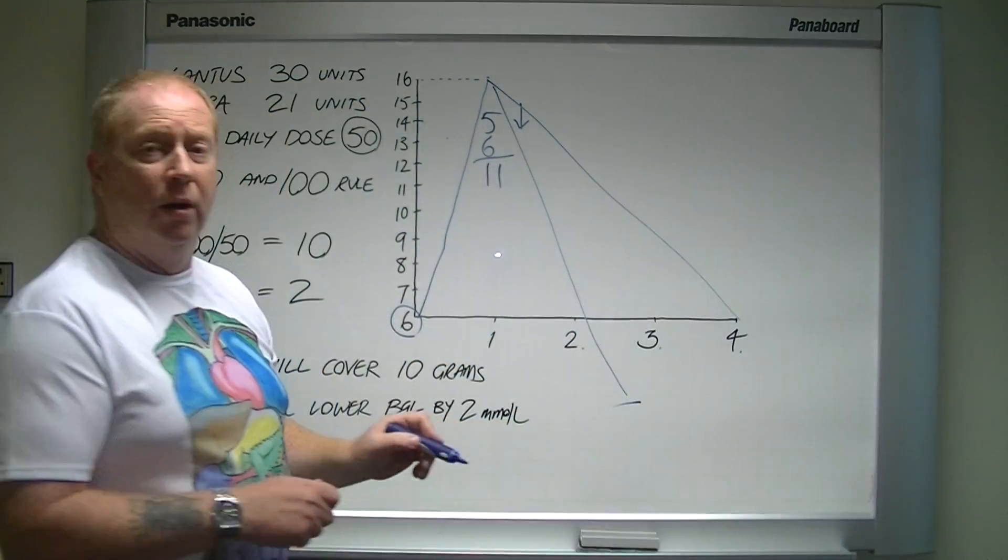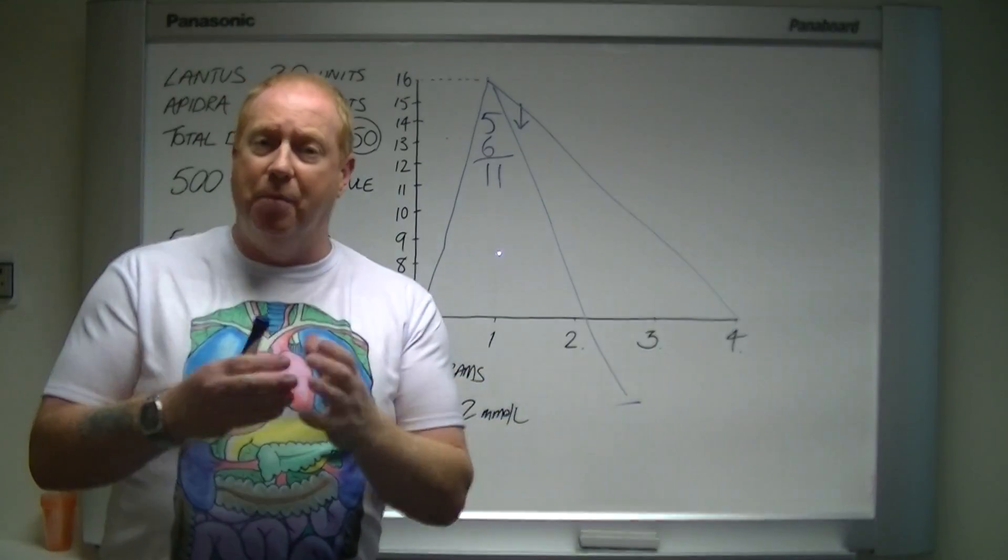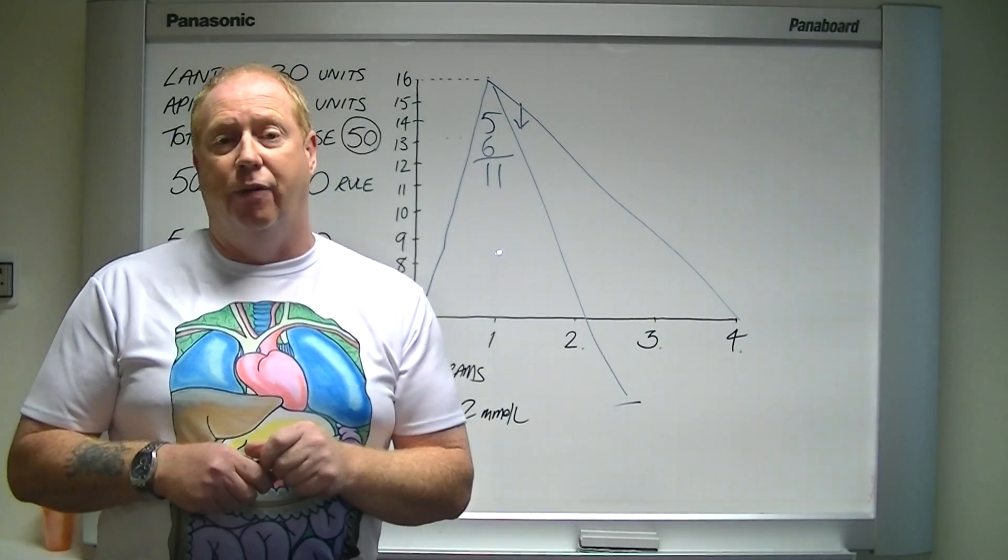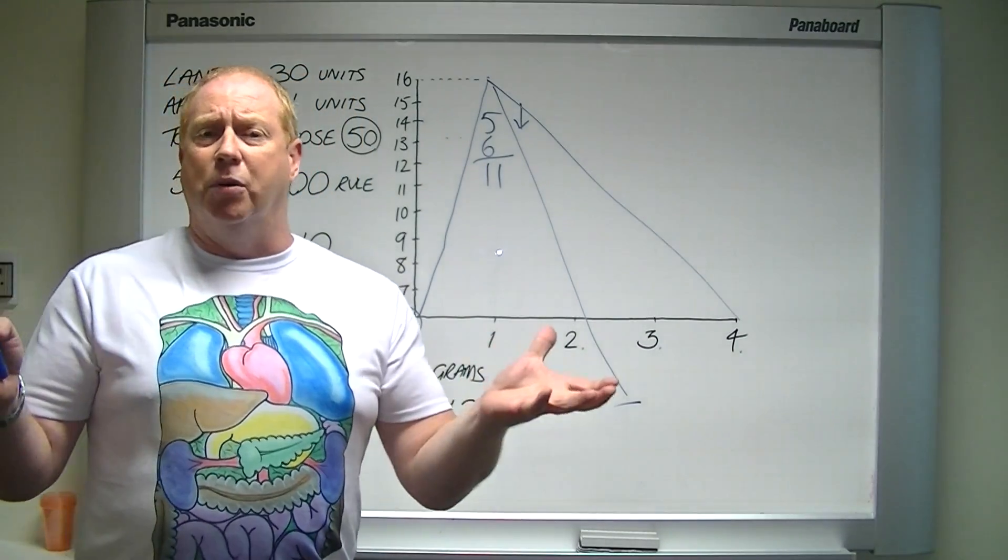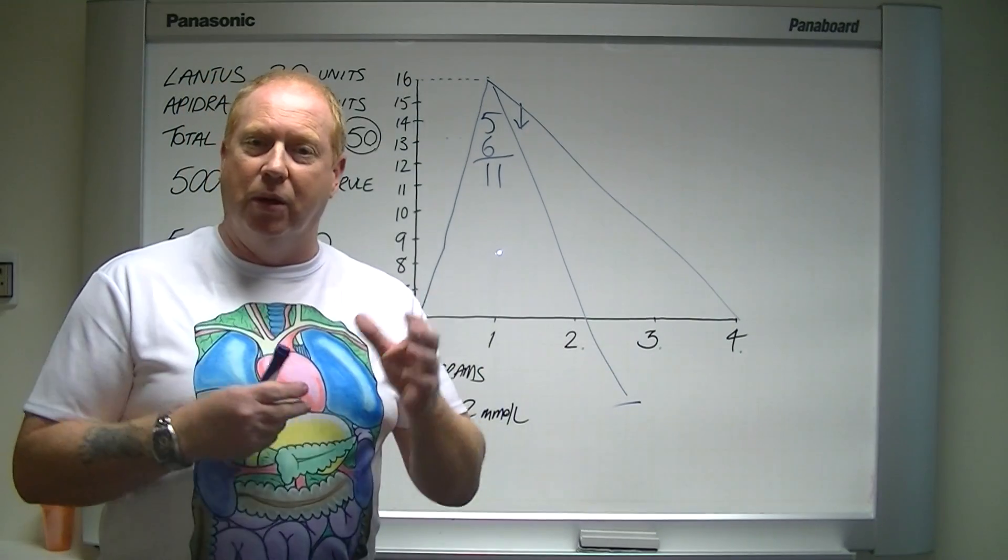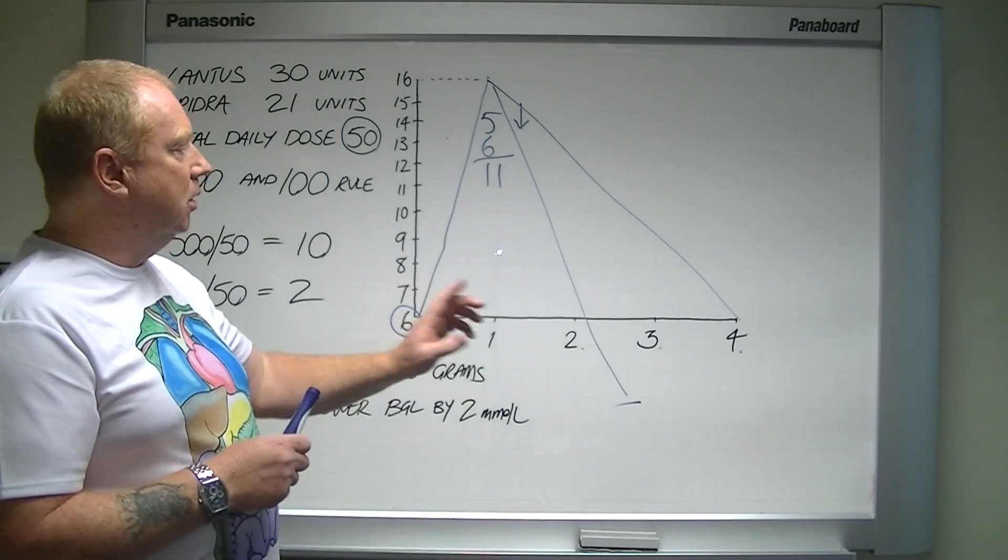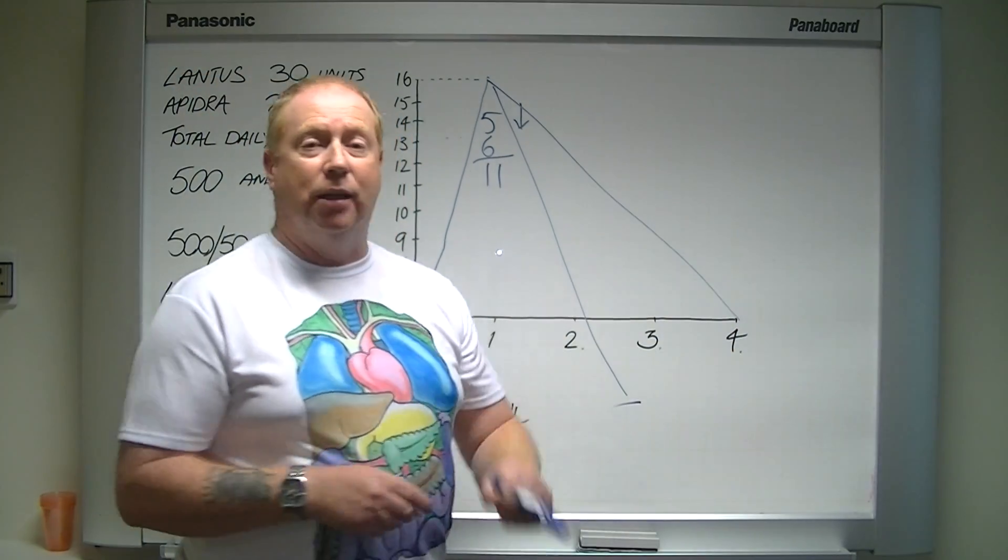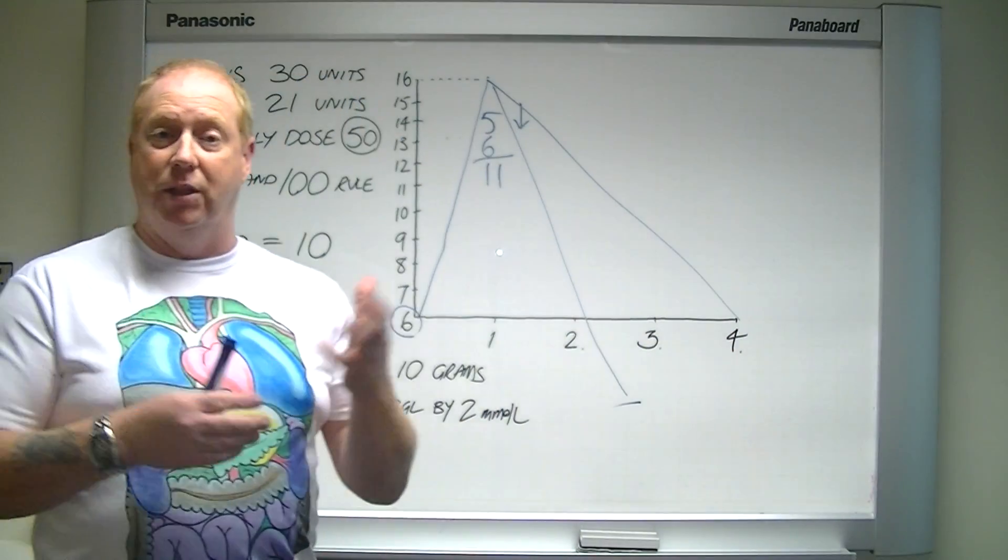because insulin, mealtime insulin lasts for four hours or has a duration, insulin acting time of four hours. So there's still two hours worth of insulin left working on your blood glucose level. So it will cause a hypo. So you're not expected to hit your target until at least four hours after you've injected insulin.